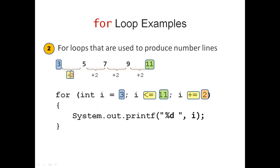It is always important to know whether your number line is going up or down. In our case, the number line is going up. We start with the smallest number and end with the largest number. That means when I'm comparing I to 11, I have to use less than or equal for my comparison. And when I increment my control variable, I need to use plus equal as my compound operator.